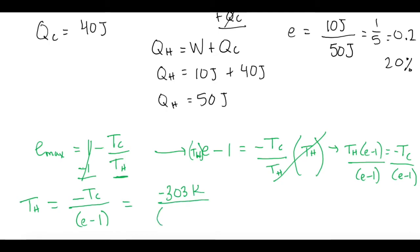So negative 303 Kelvin over our efficiency of 20%, so 0.2 minus 1. So now if you notice, we have a negative divided by a negative, so that gives us negative 303 Kelvin divided by negative 0.8 gives us 378.75 Kelvin.